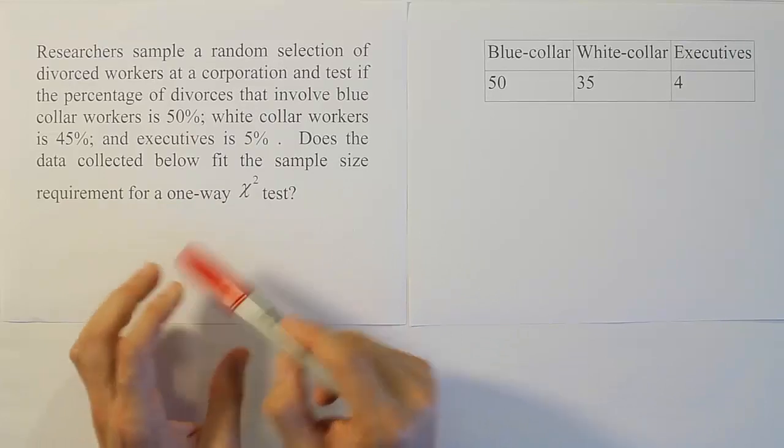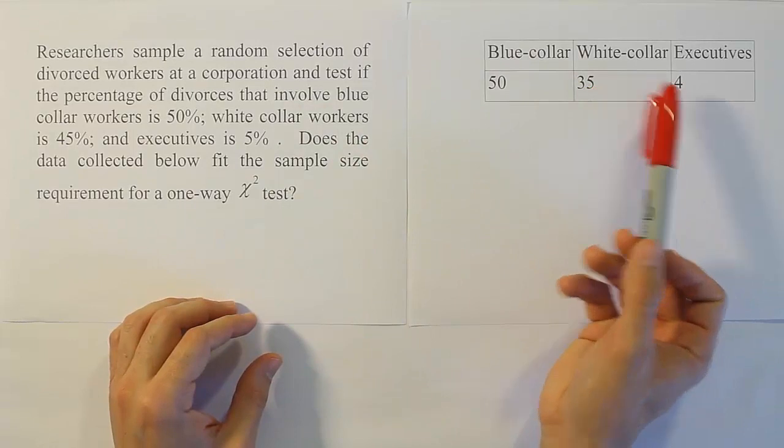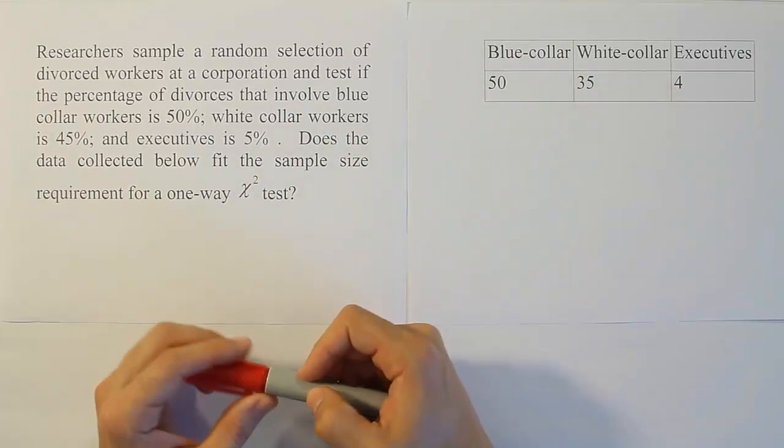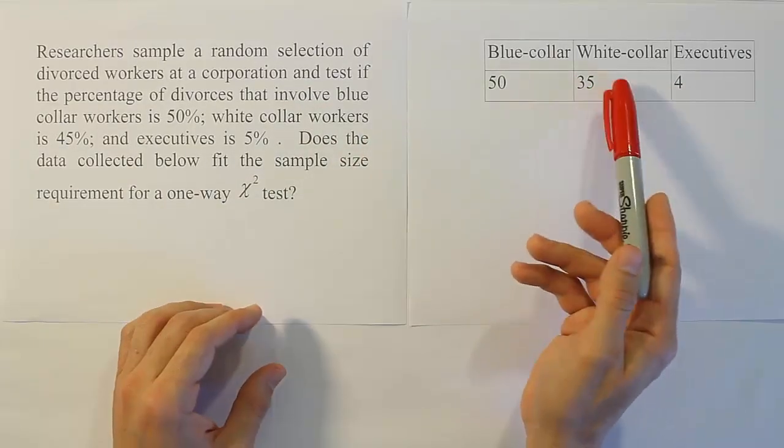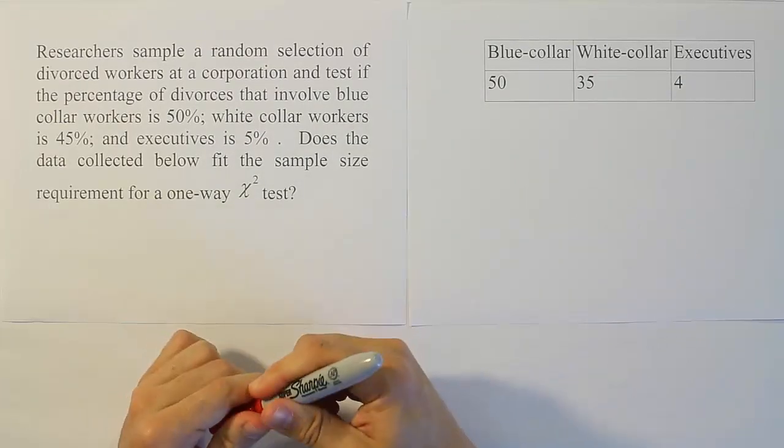The sample size requirement for a chi-squared test is simply that we want to make sure the expected value for each cell in the table is at least 5. We have to make sure that the expected values for each cell is 5 or higher. Let's try to figure that out.